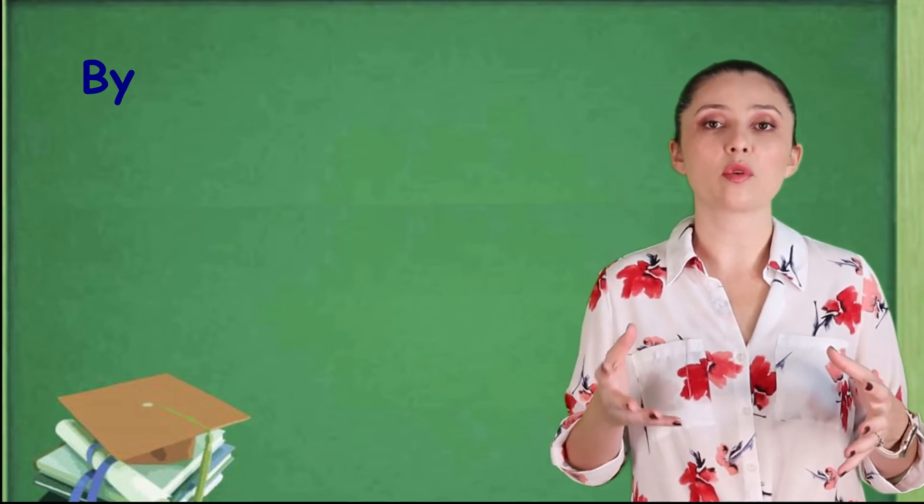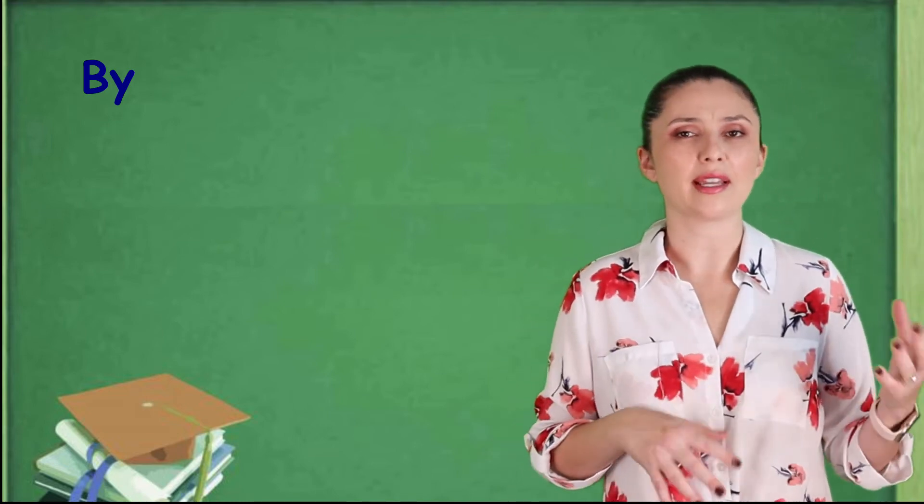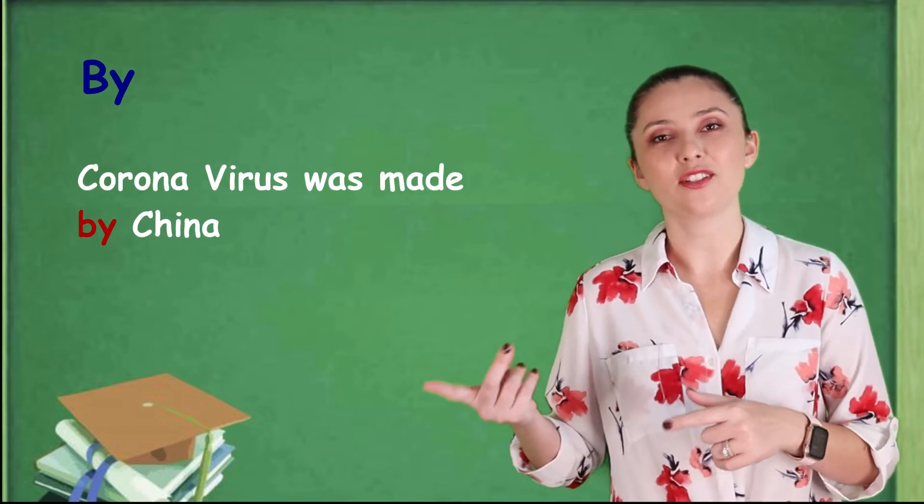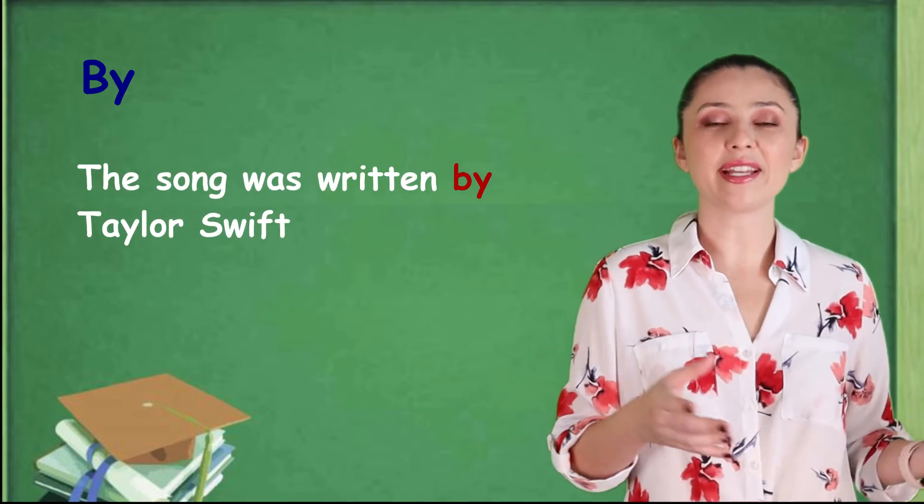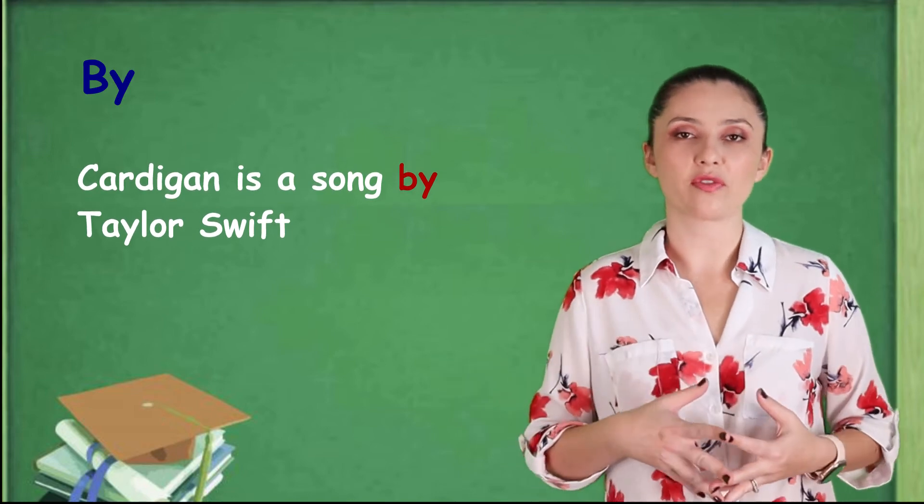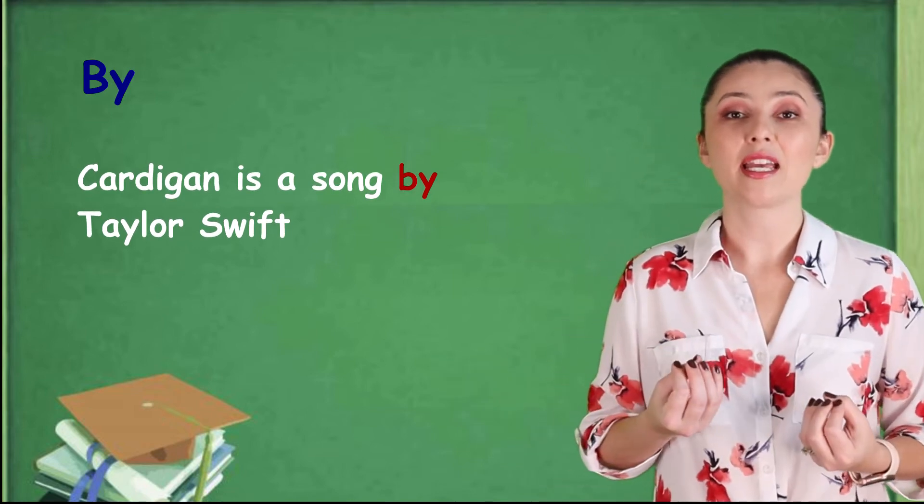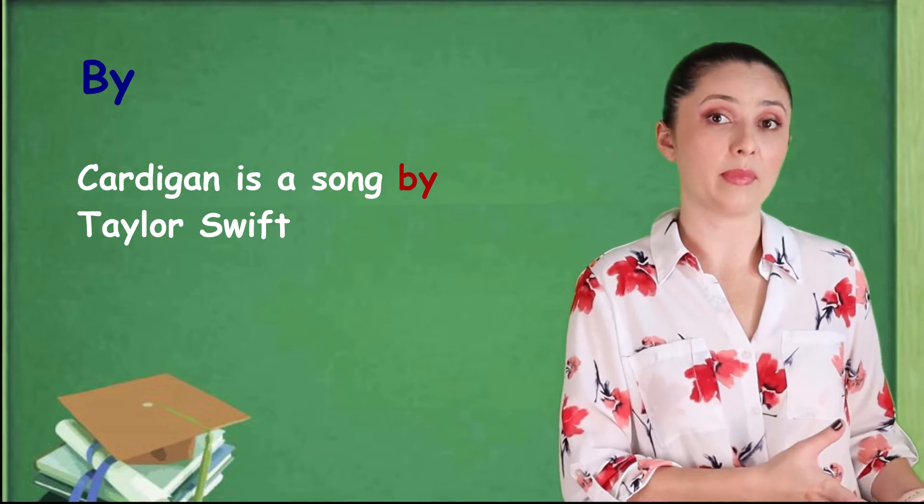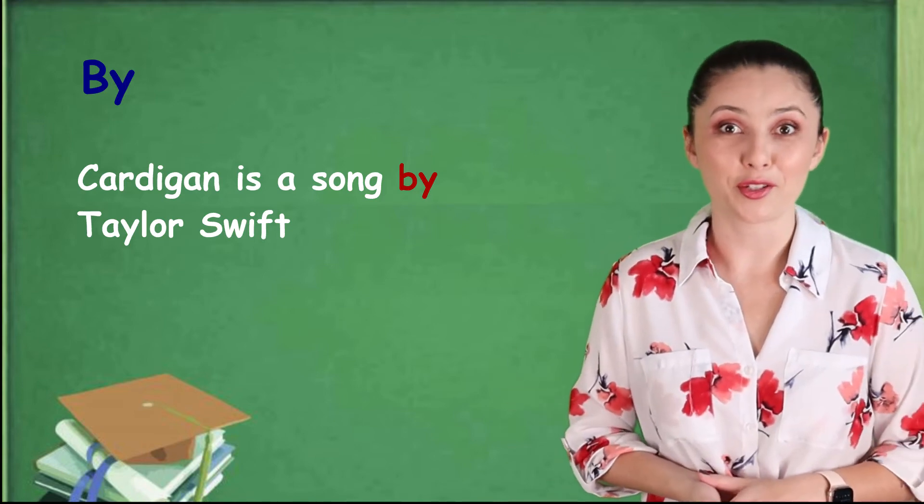Or, you can also use the preposition by to talk about something that was made by someone or a company. So, coronavirus was made by China. The song was written by Taylor Swift. Cardigan is a song by Taylor Swift. So, here the by, it means simply that was made by this person or this company or in this case, the country.